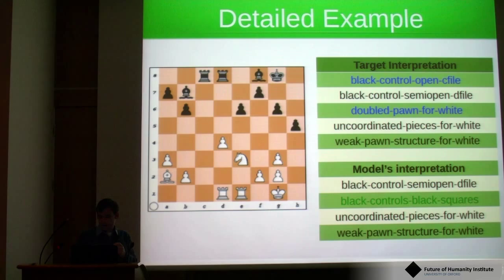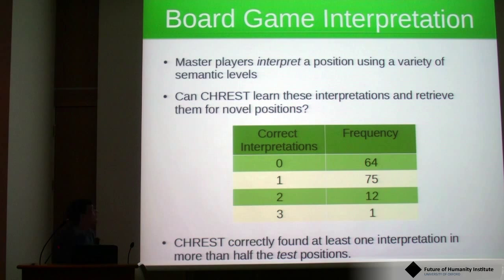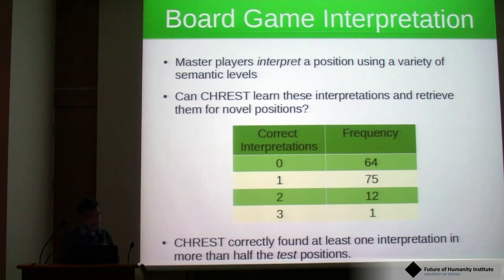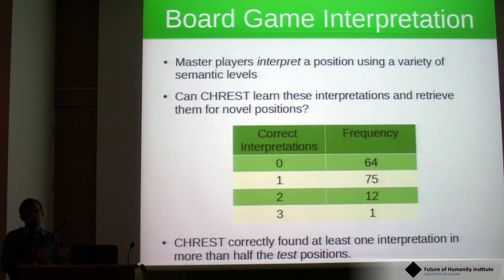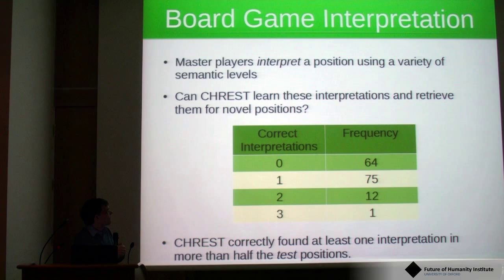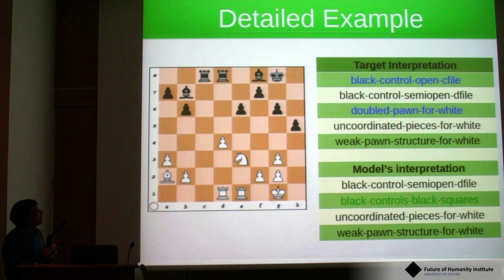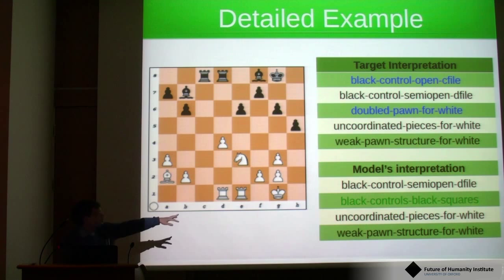I divided that data set up, trained CREST with some positions, and tested it on others. This table shows how many interpretations it got correct in the test set — positions not seen before. In more than half of the positions it found at least one interpretation that was correct. The best example had three interpretations that matched between the model and the master player; the model added one the master didn't, and the master had two that the model missed.